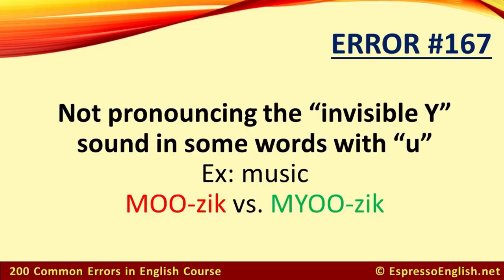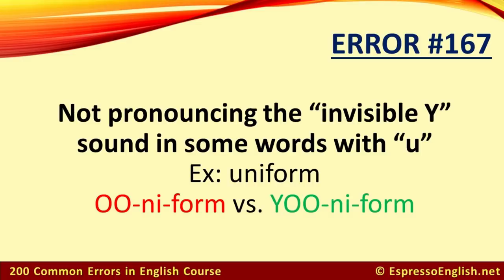Error number 167. The final mistake we'll cover in this lesson has to do with what I like to call the invisible Y sound. Some English learners pronounce this word like music instead of music. It also happens with uniform. Don't say uniform — say uniform. The letter U should be pronounced like U, not just OO.